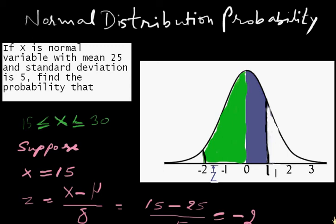This is the last question on normal distribution probability, more difficult than the previous question. We are given that X is a normal variable with mean 25 and standard deviation 5. We need to find the probability that X is between 15 and 30.